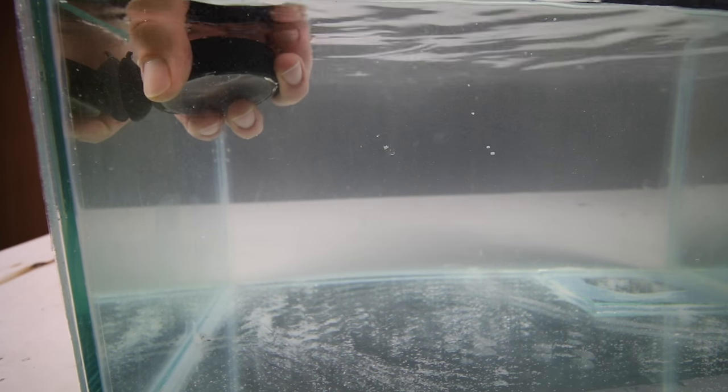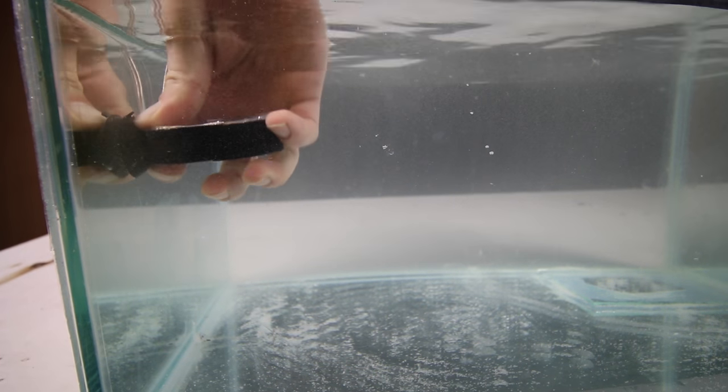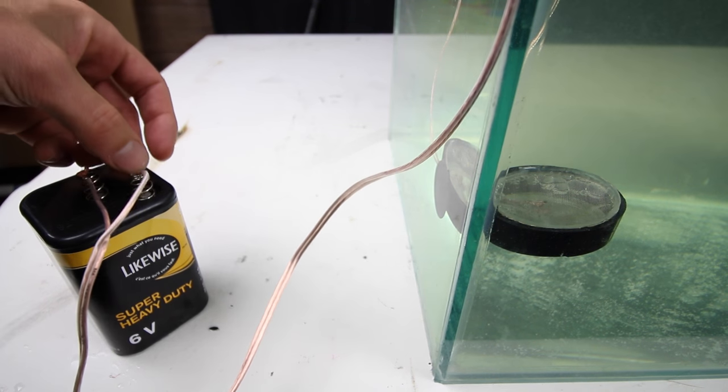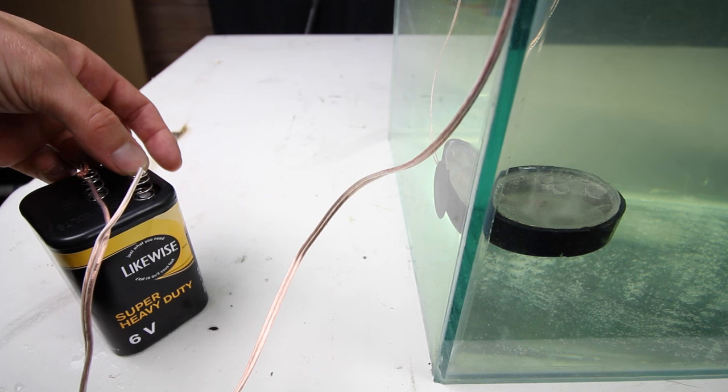Now we place the disc inside the aquarium and attach the wires to the negative terminal on the battery first and then the positive terminal. Now as soon as you attach this to the positive terminal, watch what happens.